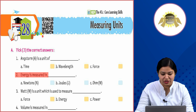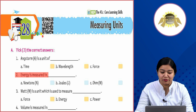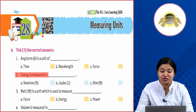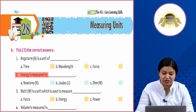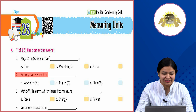Second: Energy is measured in — option A: Newtons, option B: Joules (J), option C: Ohm. The question asks in which unit energy is measured. The correct answer is option B, Joules.